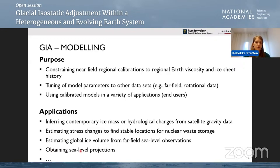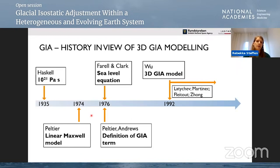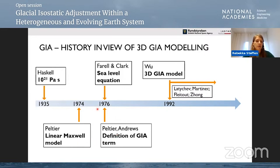Here is a short history overview of 3D GIA modeling. It basically all started in 1935 with Haskell, when he estimated the mantle viscosities based on GIA observations. About 40 years later, Peltier published the first linear Maxwell model results. The Maxwell model is still one of the rheological models in GIA that is commonly used, but meanwhile different models are also applicable. Only two years later, Farrell and Clark presented the sea level equation, which is necessary to get the accompanying sea level changes from the ice mass changes and the response of the solid Earth, and at the same time the GIA term was defined. In the early 90s, Patrick Wu was the first to present the 3D GIA model, and since then many other groups have been developing codes capable of producing 3D GIA model results.